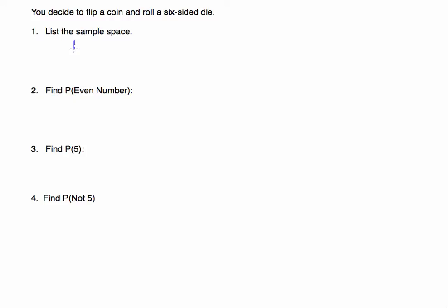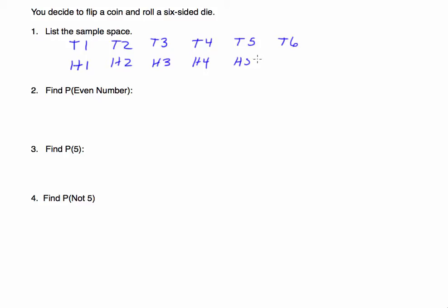I could get tails and one, tails and two, tails and three — you can see the pattern. I'm listing all the possible combinations with tails. I could also get heads and one, heads two, heads three, heads four, heads five, and heads six. This is all of the possible combinations — these are all the possible outcomes of this experiment.